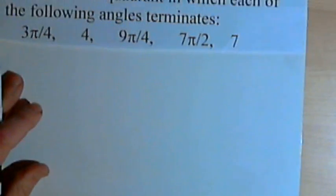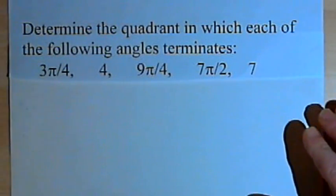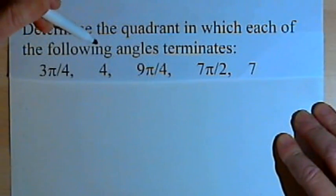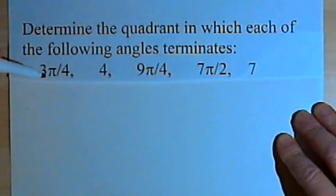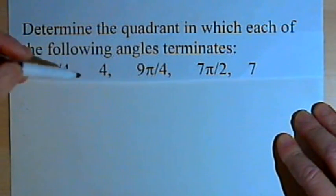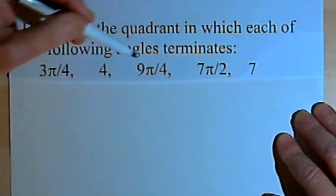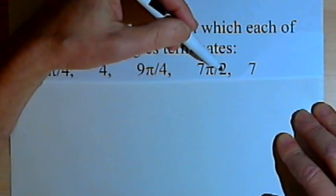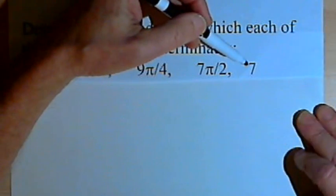So let's get started. Suppose you've been given a problem like this: Determine the quadrant in which each of the following angles terminates. So I've got 3π/4, and then 4 (that'd be 4 radians), 9π/4, 7π/2, and 7 (once again that would be 7 radians).